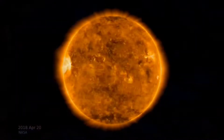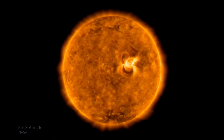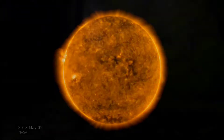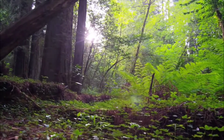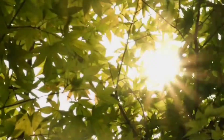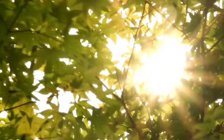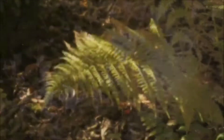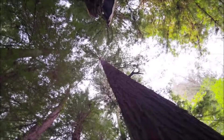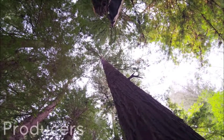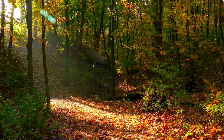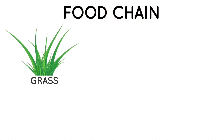All of the energy in the earth's food chain comes from the sun. The sun's energy reaches the earth as light and heat, and plants capture some of it and convert it into food through photosynthesis. Because plants make or produce their own food from the energy, they are called producers. Every food chain must begin with a producer — for example, grass.